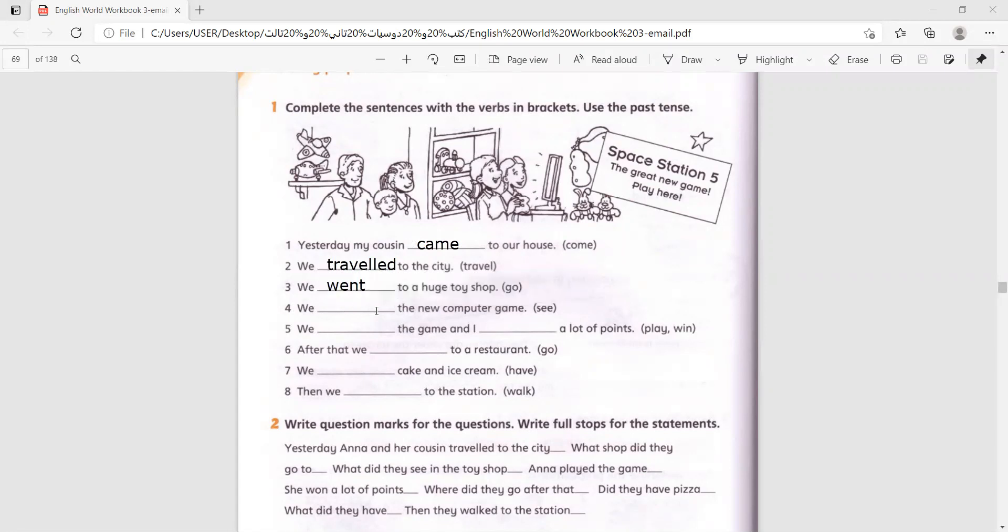We blanked. Number four, we blanked the new computer game. See? That's right, saw. Number five, we blanked the game and I blanked a lot of points. Play and win. We played and I won.